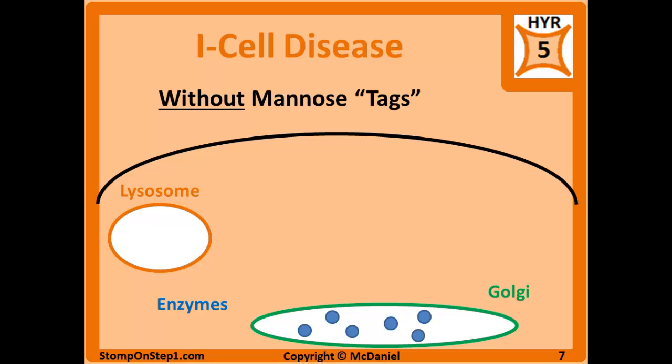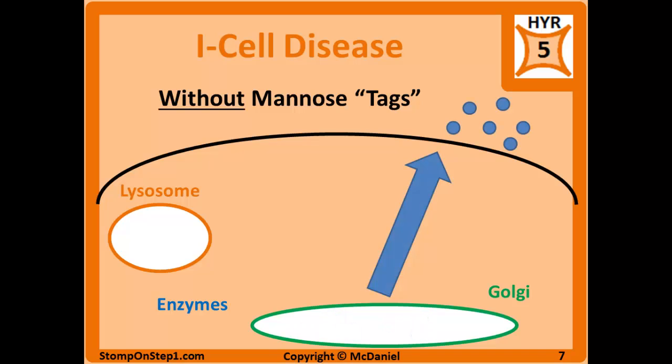I-cell disease is when you don't have the proper mannose tags — you're not able to phosphorylate that mannose. Because there's no tag to tell the enzymes where to go, they follow the normal default pathway, which is to excrete the enzymes outside of the cell into the extracellular matrix. So in I-cell disease, you end up with all these dangerous lysosomal enzymes outside the cell, and you can find them in places they're not supposed to be like the blood and urine, where they can also damage other cells.